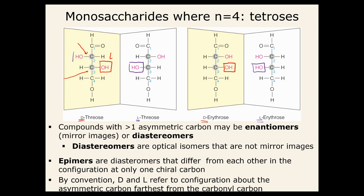Enantiomers are mirror images of each other. D-threose and L-threose are mirror images, and D-erythrose and L-erythrose are mirror images — non-superimposable mirror images. With the R and S system, each chiral carbon would have its own R or S designation, but we won't go into that depth here.